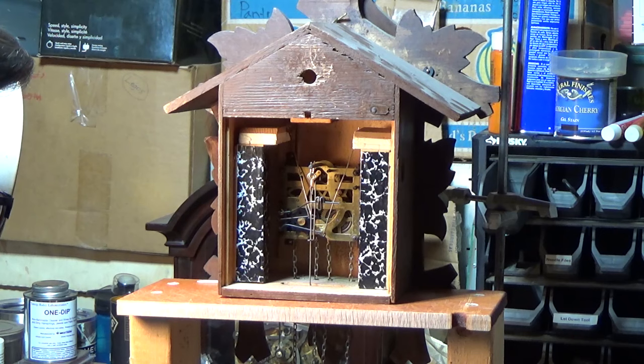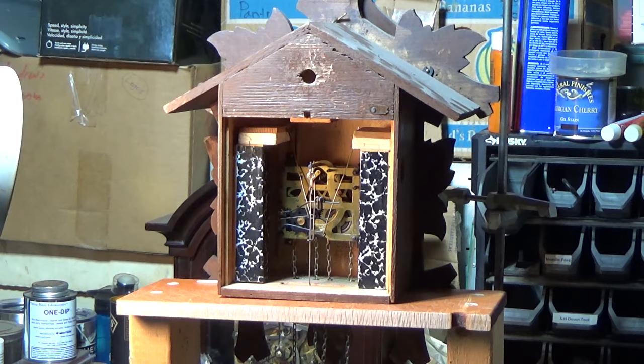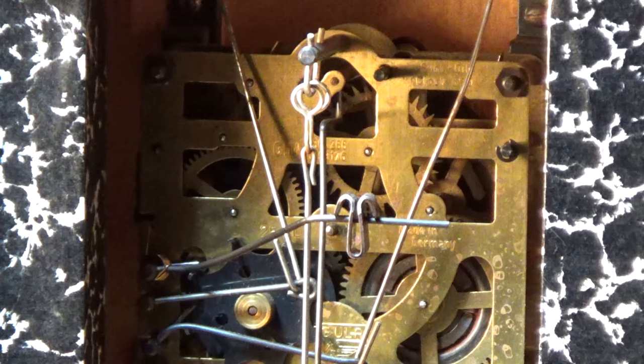From this point on, the rest of the disassembly is done mainly from the back and sides of the clock. Now that we're working inside the clock, special care must be taken to ensure that parts don't get damaged. However, if the worst should happen, replacements are readily available. Luckily, this one is in pretty good condition inside, so no new parts should be needed.